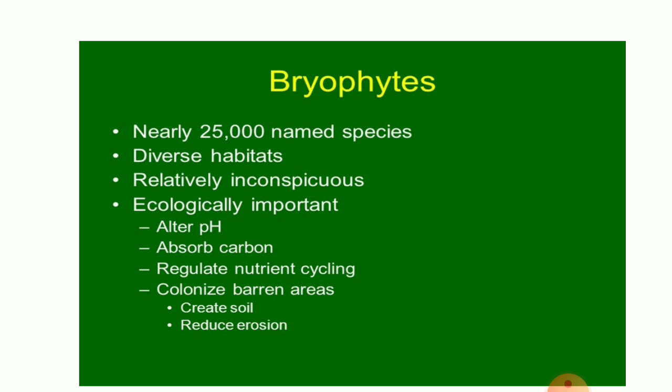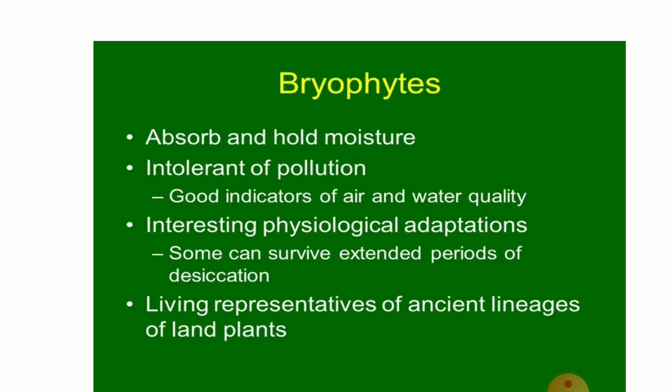Bryophytes nearly occupy diverse habitats and there are about 25,000 species found all over. They are relatively inconspicuous but ecologically important. They alter the pH of the soil, absorb carbon, regulate nutrient cycling, colonize barren areas, create soil, and can even reduce erosion. They absorb and hold moisture. They are intolerant of pollution and are good indicators of air and water quality.